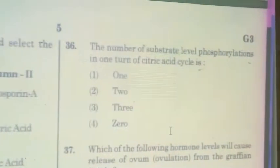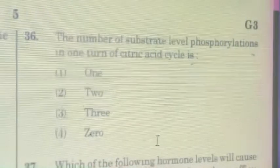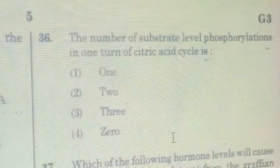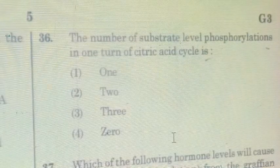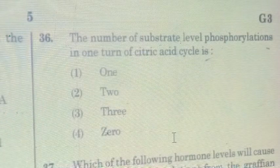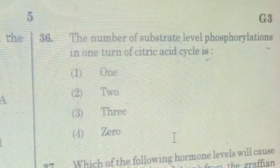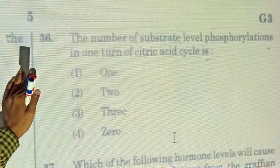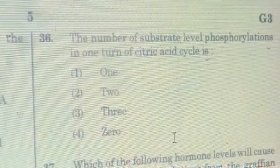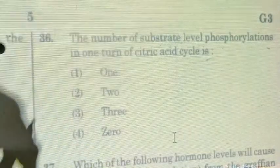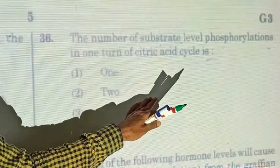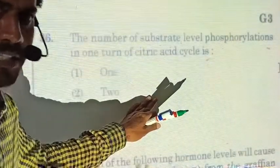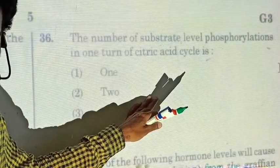Question thirty-six: the number of substrate-level phosphorylations in one turn of the citric acid cycle is one. One molecule of succinyl-CoA, a four-carbon compound, undergoes substrate-level phosphorylation to produce one GTP, which is equivalent to one ATP. In two turns of the Krebs cycle (for one glucose), two substrate-level phosphorylations occur. But per one turn, the answer is one.